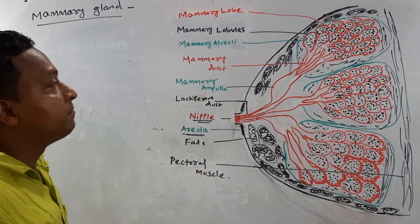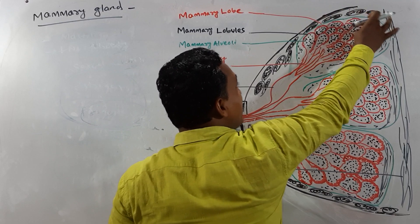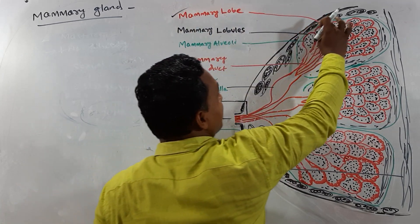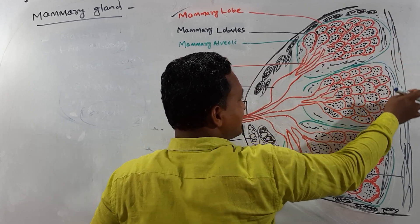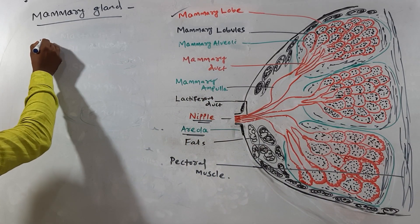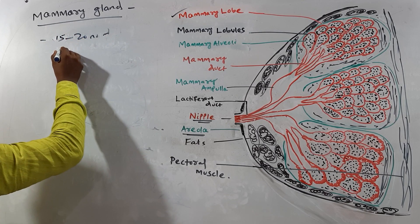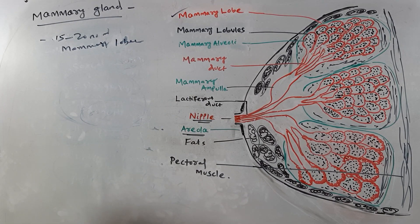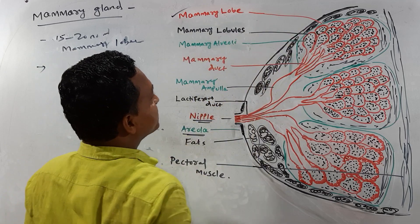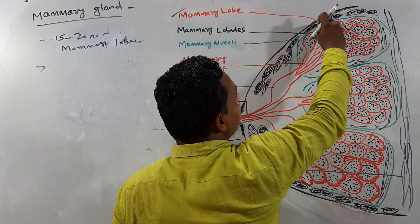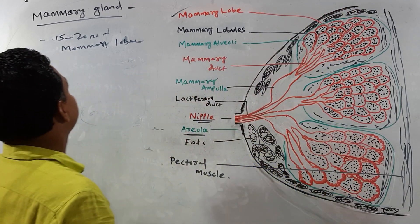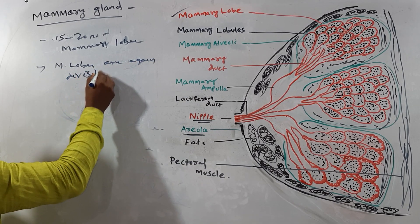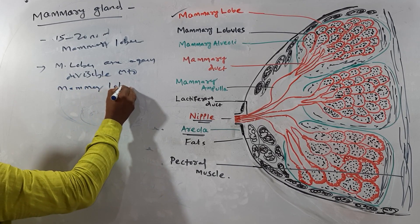Each mammary gland is made up of 15 to 20 lobes. These mammary lobes are again divisible into mammary lobules.